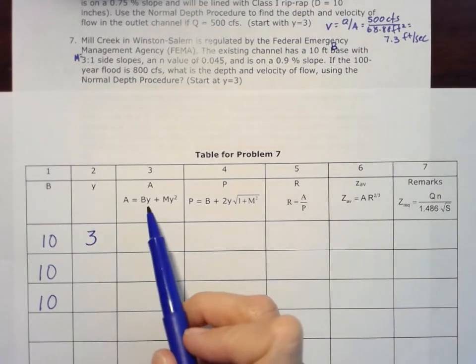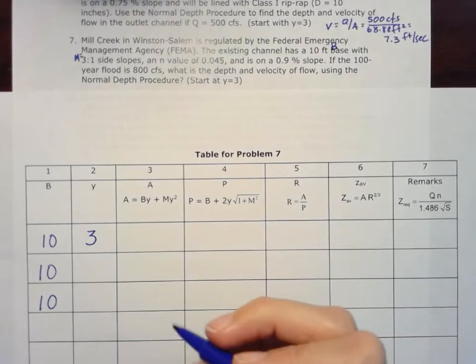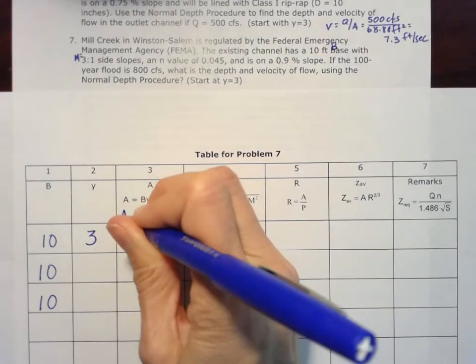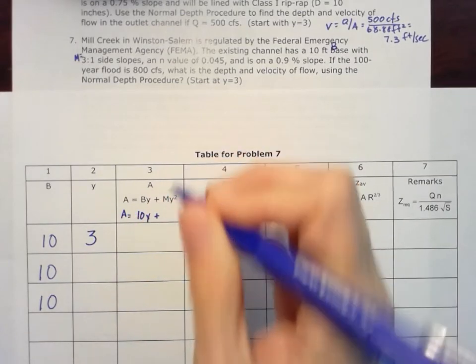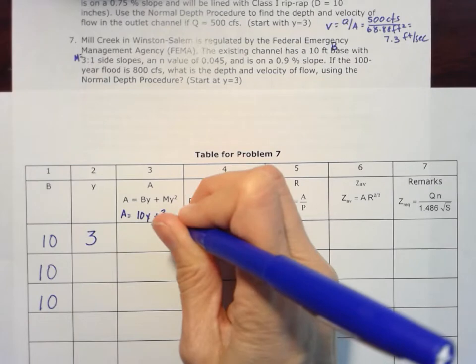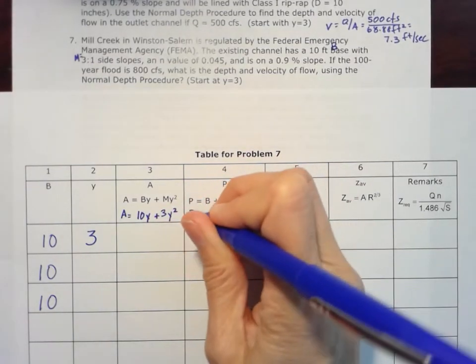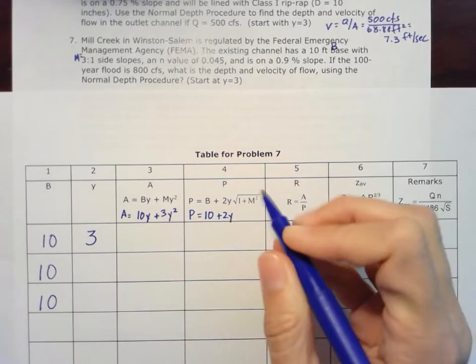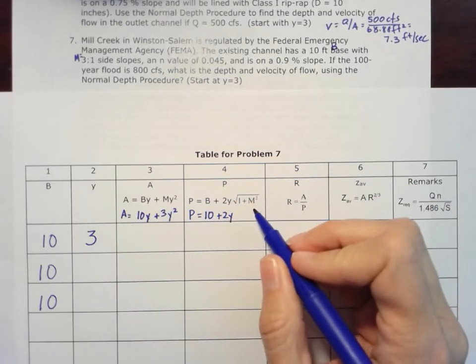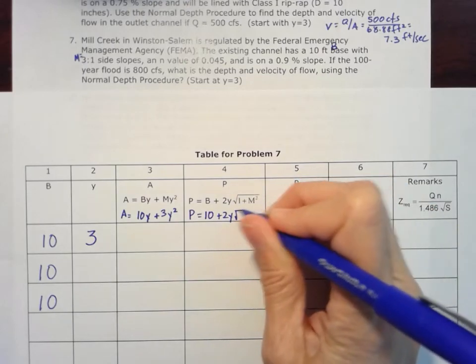Let's take a look at filling out our table here. First thing we're going to need to find for all of these different depths is our area. So we know that B is always going to be 10, so our area is going to be 10 times Y, and then M is always going to be 3, so 3Y squared plus. The wetted perimeter is going to be that 10 base plus 2Y, and then this time our M is 3, so 3 squared is 9 plus 1 is 10, so 2Y square root of 10.